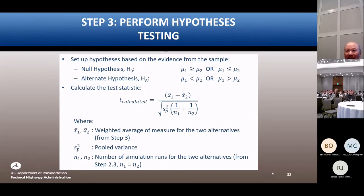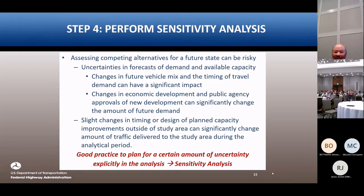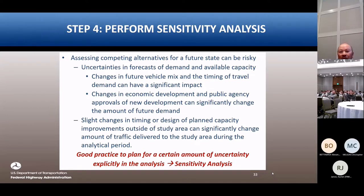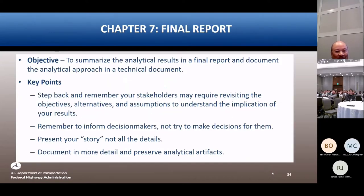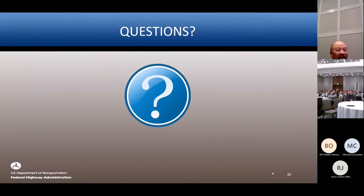If litigation ever arises, we have documentation to prove the process. The sensitivity analysis gets into the reliability space — what happens if you add more demand to the system? In most large metro areas we can't put any more demand than what's there; the only question is how long you have to sit in traffic. The final chapter covers the report — capture what you did, memorialize it, document it.